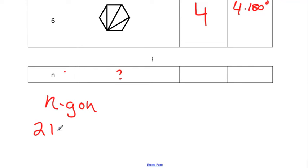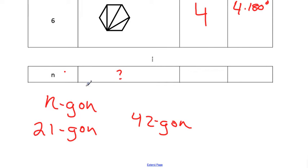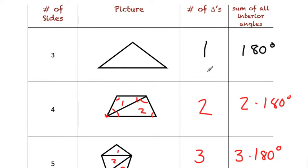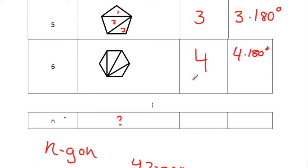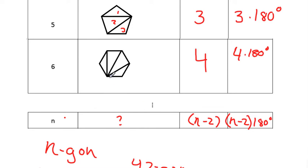So if they give you a 21-Gon, that means you have a polygon with 21 sides. If they give you a 42-Gon, that means a polygon with 42 sides. Sometimes they call 13-Gons and 9-Gons instead of nonagon. The question is: if you get a certain number of sides, how can you figure out how many degrees are on the inside if you add all of the interior angles? Well, if you notice — let's look for a pattern. Three goes to one, four goes to two, five goes to three, six goes to four. This number is two less than whatever the number of sides is. So we write that as N minus 2. You tell me the number of sides, subtract two, and that tells you how many triangles. Then it's each triangle times 180 degrees. So this is (N-2) times 180 degrees, and that tells you the total sum of all the interior angles.